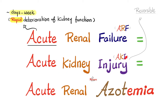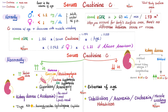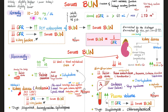Acute renal failure equals acute kidney injury equals acute renal insufficiency or acute renal azotemia. It's called 'acute' because there is rapid deterioration of kidney function within days or weeks. It's called 'injury' because for the most part it is reversible. When the kidney fails, serum creatinine goes up and serum BUN goes up because there is no one to excrete them.